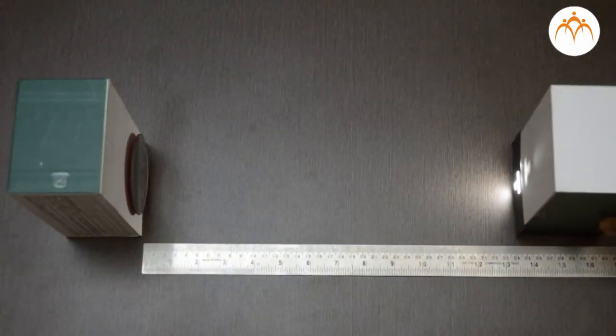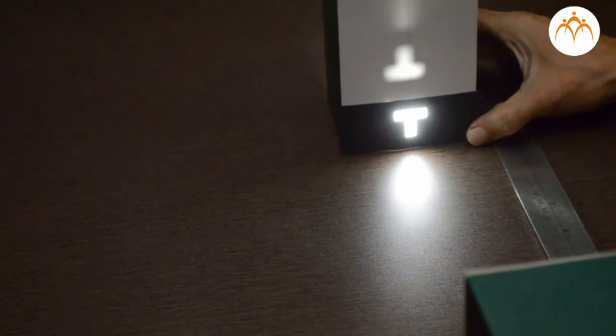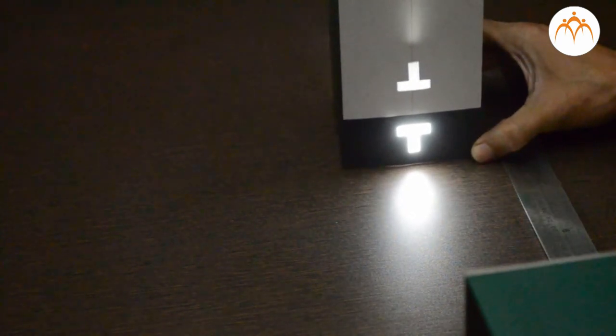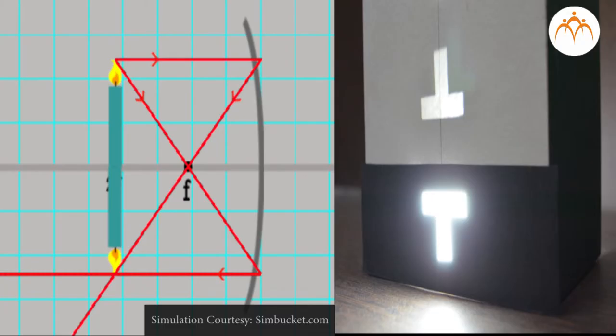As per the equation, the image is formed at a distance of 30 cm. The image is real, inverted, and its size is same as that of the object. The magnification obtained in this case is 1 as both image and object height are the same.